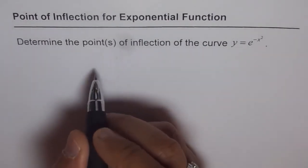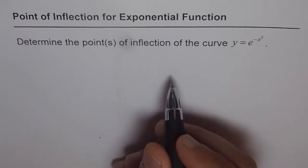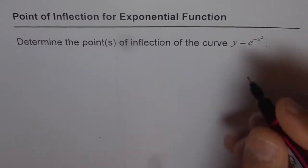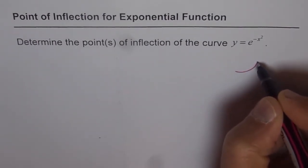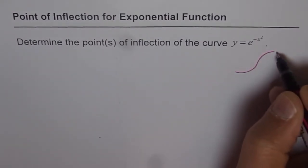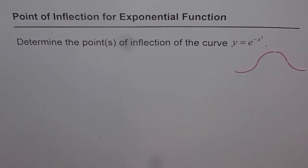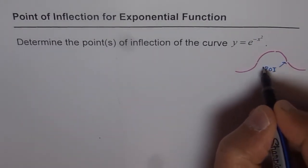What is the point of inflection? A point of inflection is the point where the concavity changes. So if the concavity changes from concave up to concave down, or from concave down to concave up, that is a point of inflection. This point in between where the concavity changes is called the point of inflection.